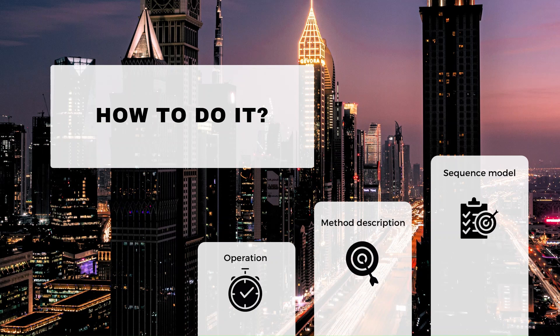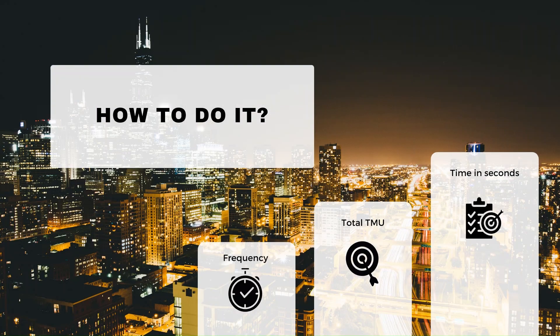Now let's look at how to apply MOST. First, we identify the operation — the major activity or process being done. In the method description, the major activity is broken down into certain minor activities. According to the sequence model — controlled move, general move, or tool use — we identify which sequence model applies to each minor activity.